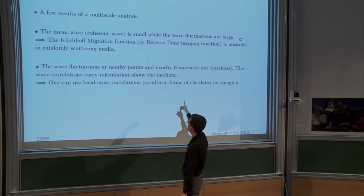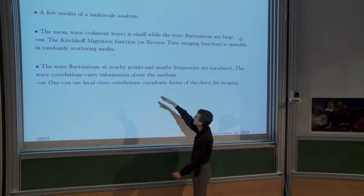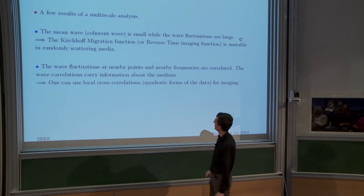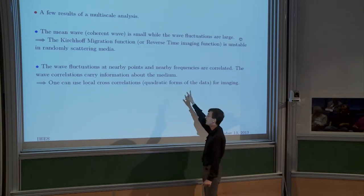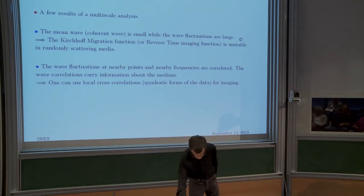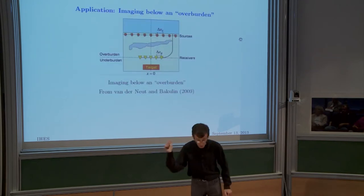Now we have a new point of view: don't try to image with the mean, but exploit the wave fluctuations — the correlation structure of the wave fluctuations. Forget about the mean. Look at the fluctuations, look at the clutter noise. Don't get rid of the clutter noise — keep it, exploit it, and build an image with it. You will now image with cross-correlations that are quadratic in the data.